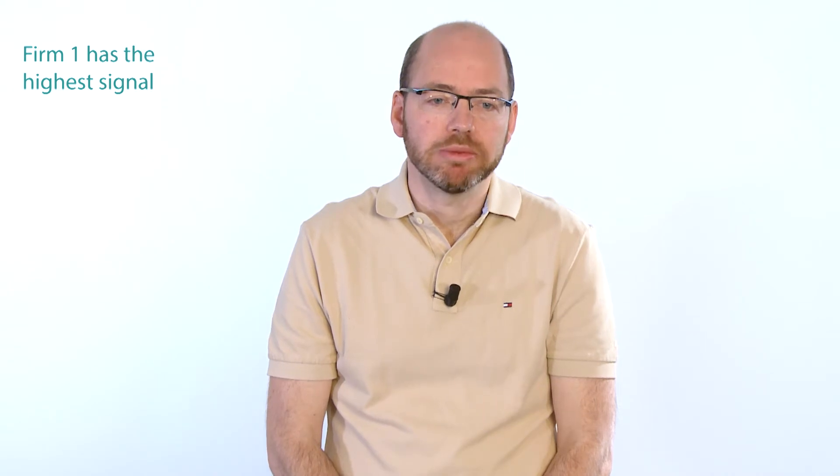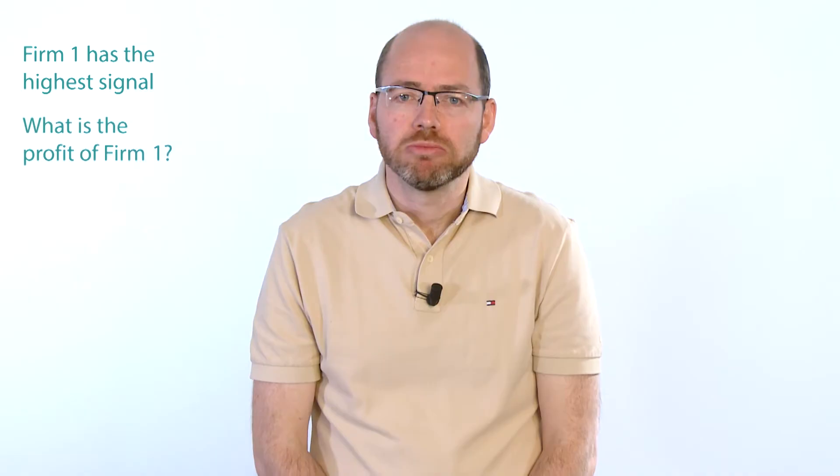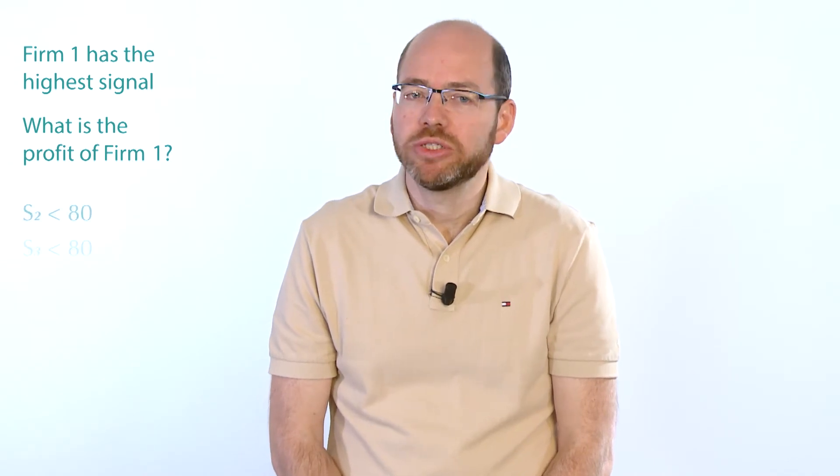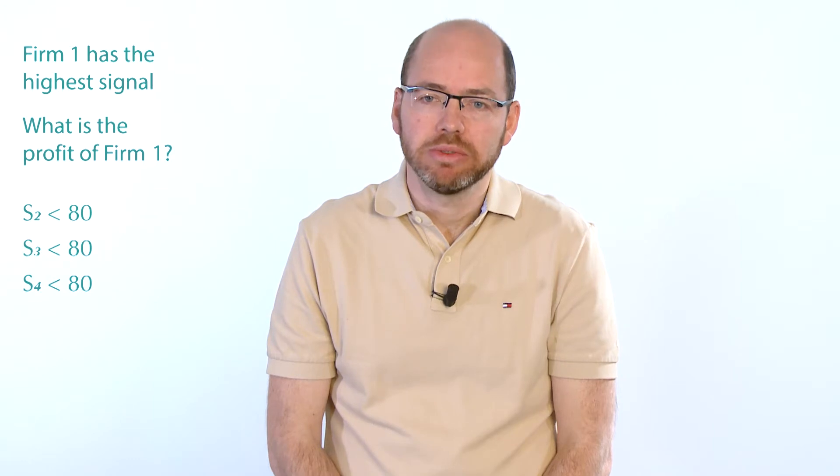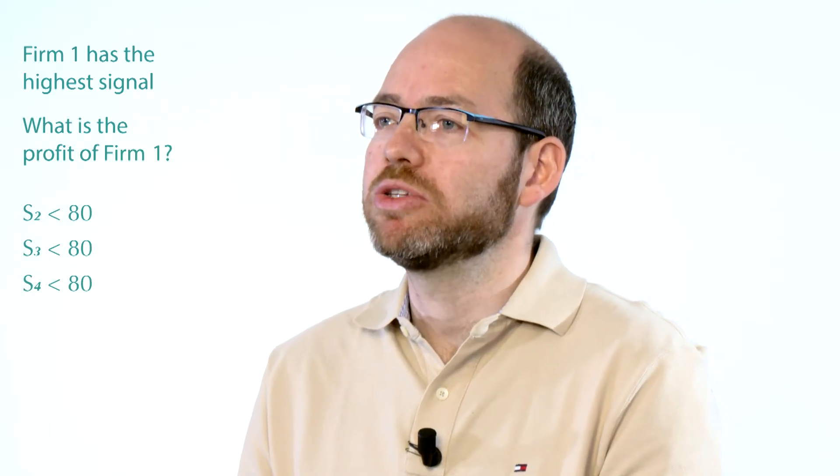Suppose that S1 equals 80 million. Then Firm 1 will submit 80/4 + 75 = 95 million euros. Consider the case when Firm 1 wins. Since all firms submit s_i / 4 + 75 million euros, which is increasing in s_i, this means that Firm 1 has the highest signal — this is why Firm 1 wins. Now, what is Firm 1's profit? We don't know, because we don't know the signals of the other firms. But we can find at least an upper bound on its profit. Since S1 is the highest signal, S2, S3, and S4 are all lower than 80 million, so the average of S1, S2, S3, and S4 is at most 80 million euros — meaning V is at most 80 million euros.